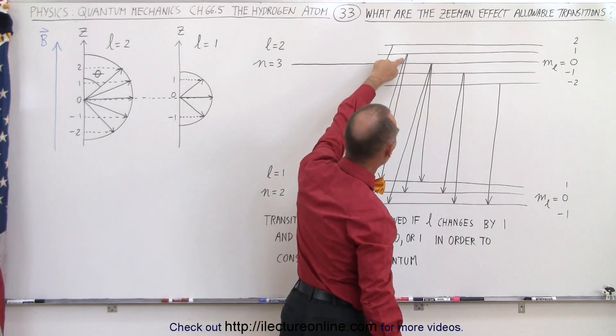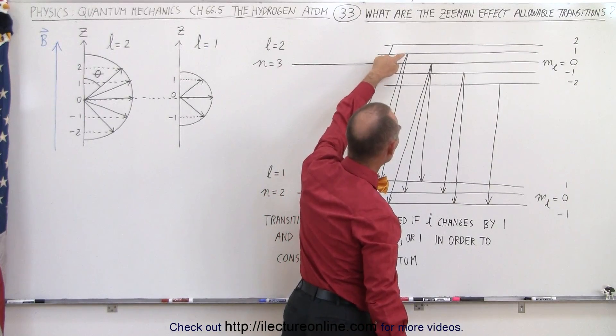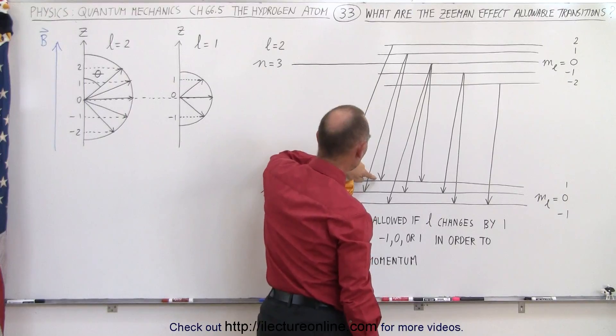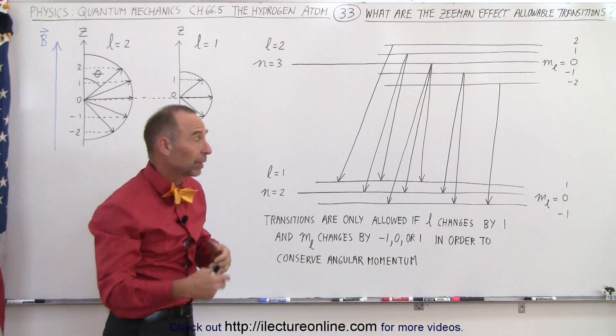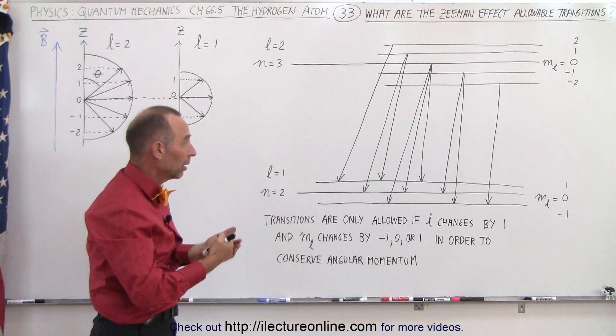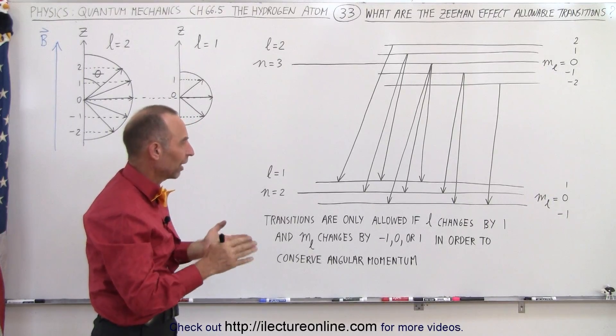When we go from m sub l equals 1, we can go from 1 to 1, or from 1 to 0, but not from 1 to negative 1, because that would be a change of an integer value of 2, so that's not allowed.